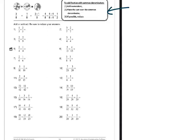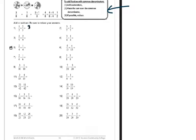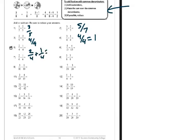In each of these we're just going to be adding and subtracting the numerators. Number one: one-fifth plus two-fifths is three-fifths. Number two: three-sevenths plus two-sevenths - three plus two is five, so five-sevenths. Number three: two-ninths plus two-ninths is four-ninths. Number four: three-fourths plus one-fourth is four over four, which reduces to one. Number five: two-fourths plus one-fourth is three-fourths. Five-thirteenths plus four-thirteenths is nine-thirteenths.